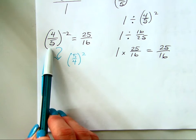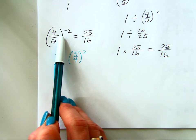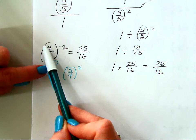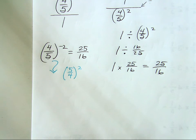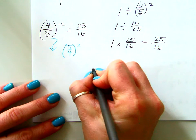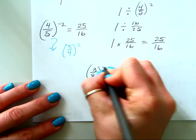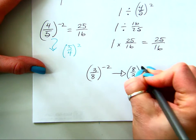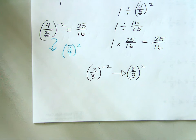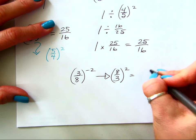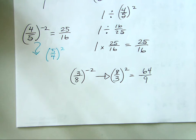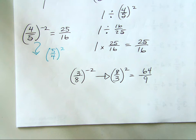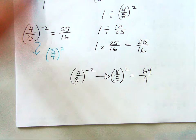Negative exponent with a fraction base — instead of doing it the traditional way, take the reciprocal and that turns the exponent positive. So if I wanted to take 3 eighths to the negative 2 power, all I have to do is take 8 thirds to the positive 2 power, giving 64 ninths. Don't forget to square the denominator as well.